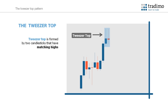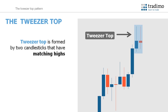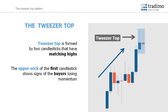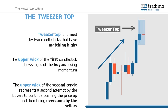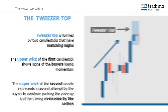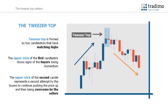Tweezer tops are formed by two candlesticks that have matching highs and can help spot a trend reversal. You can see in this example that the market is in an uptrend. The upper wick of the first candle shows signs of the buyers losing momentum. The upper wick of the second candlestick represents a second attempt by the buyers to continue pushing price up and then being overcome by the sellers. The wicks are of equal length and the highs are at the same level. These characteristics can signal the reversal of the uptrend to the downside and demonstrate how the bulls were overpowered by the bears.